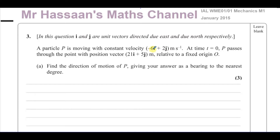The velocity vector minus 6i plus 2j tells you in which direction the particle is moving and also the magnitude of its speed. It tells you both of those things in one vector. That's what a vector quantity is — it has a magnitude and a direction. And the position vector 21i plus 5j describes the position of this particle at time equals 0.